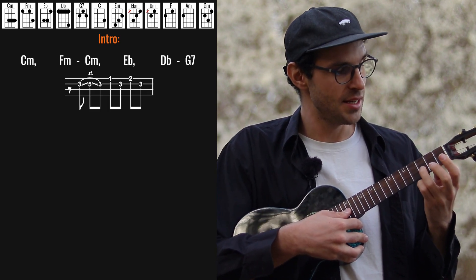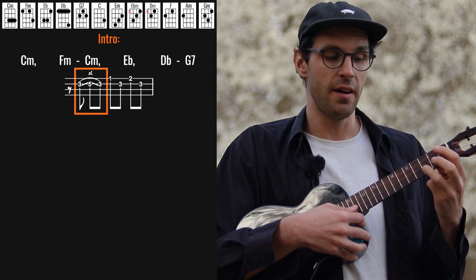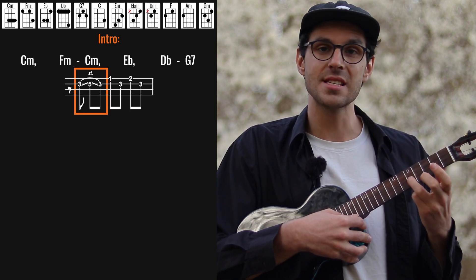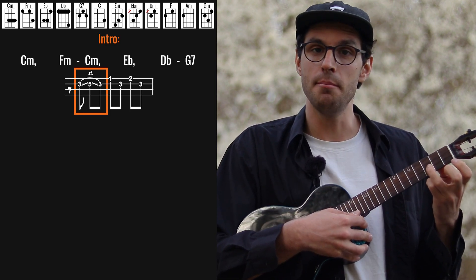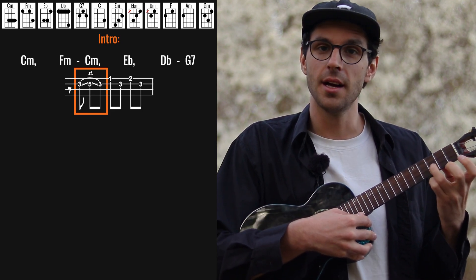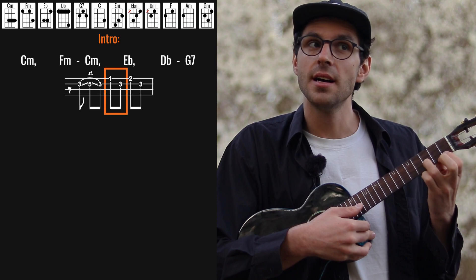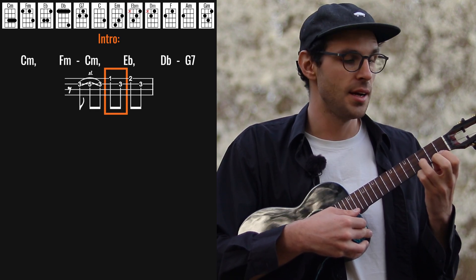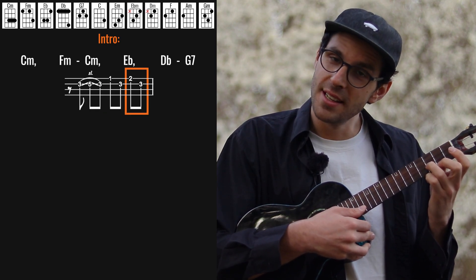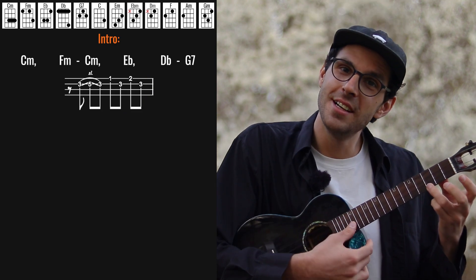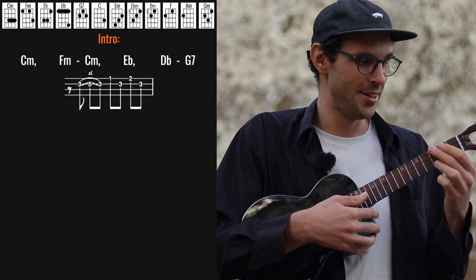And here we have this little lick. Starting on the 3rd fret of the E string, sliding it to the 5th and back to 3rd. And then A string 1st fret, E string 3rd fret, then A string 2nd fret, again E string 3rd fret, and we play the C chord.